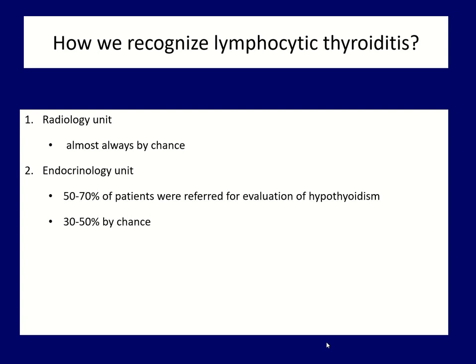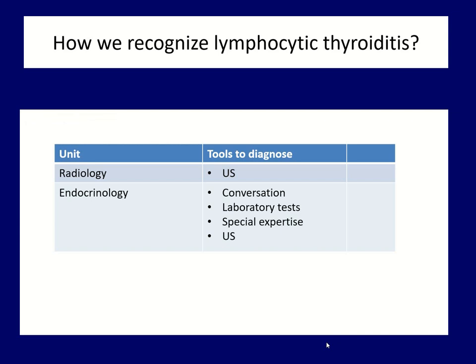Now a few words about the difference in recognizing lymphocytic thyroiditis in radiological versus endocrinological units. In most radiological cases, the diagnosis is made by chance — the patient was referred for other reasons. In contrast, more than half of patients harboring lymphocytic thyroiditis present with hypothyroidism in the endocrine unit. The second difference is in the available diagnostic tools. In most cases, the radiologist can only rely on the ultrasound presentation, while three more tools are available for the endocrinologist: anamnestic data, laboratory test results, and special expertise.